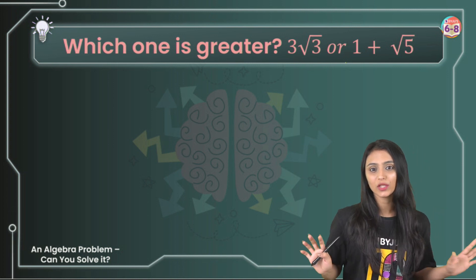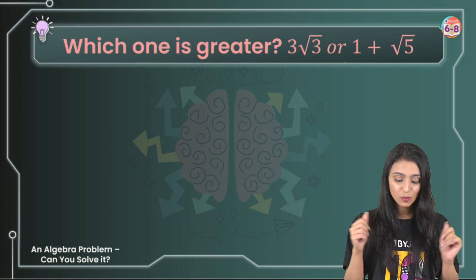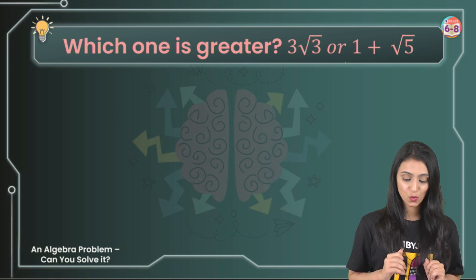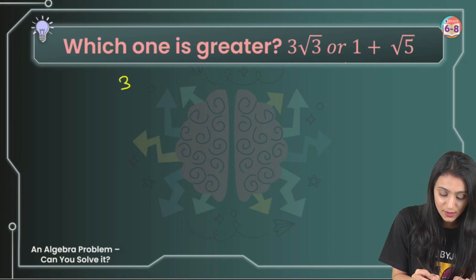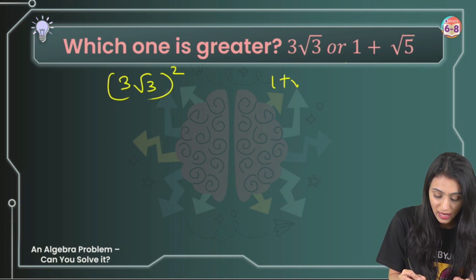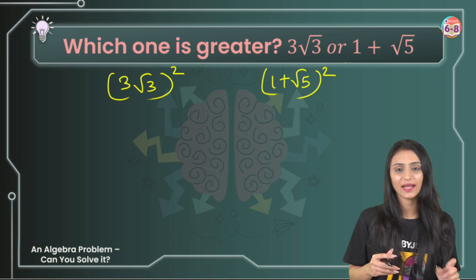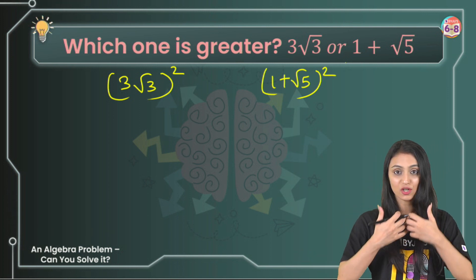Another way to do this is we will try removing the root. But how to do that? To remove the square root, I can do squaring of both these numbers. I think that's the only way where we can remove the roots from here.